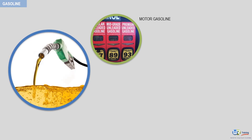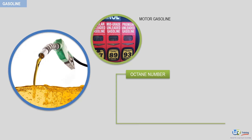For motor gasoline, the best known requirement in the specification is the octane number. The octane number is a measure of the gasoline's resistance to auto ignition, also known as pre-ignition or self-ignition. Auto ignition in a petrol engine cylinder puts abnormal stress on the piston and over time risks engine damage or even breakdown.